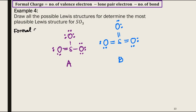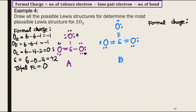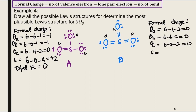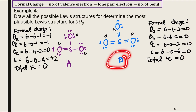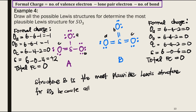Now we calculate the formal charge for each structure. The calculation for Structure A is shown, followed by the calculation for Structure B. When we compare them, all atoms in Structure B bear the lowest formal charge, so Structure B is the most plausible Lewis structure for SO₃ because all atoms bear the lowest formal charge.